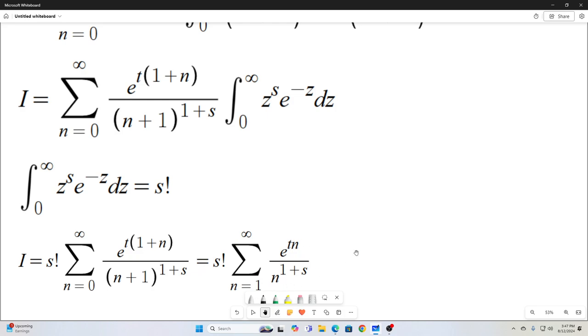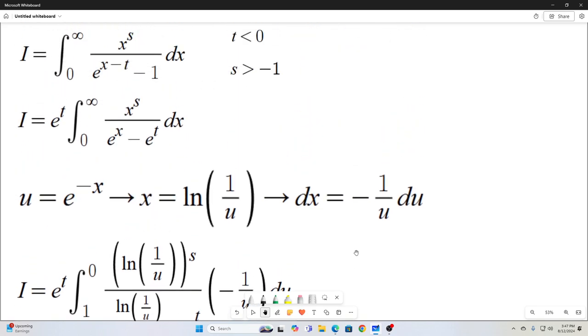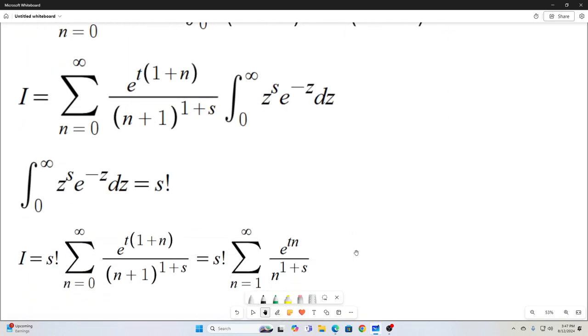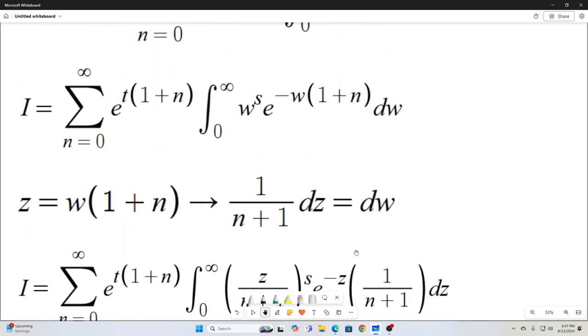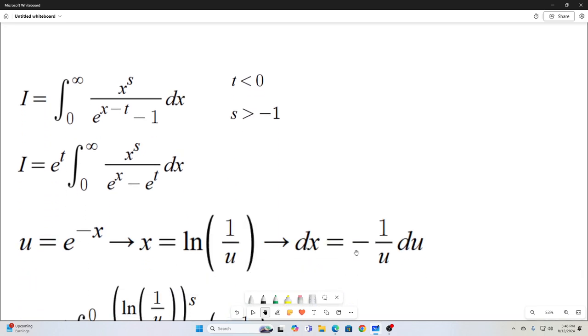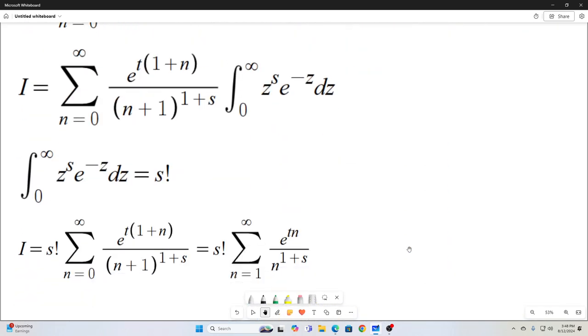And I don't know if I mentioned it at the beginning of the video or not, but there are some restrictions on s and t. We have to have t less than zero and we have to have s greater than negative one. Otherwise that integral will not converge. Assuming we're talking about real numbers. So these restrictions are necessary, but if those restrictions are met, then this integral is equal to this sum.